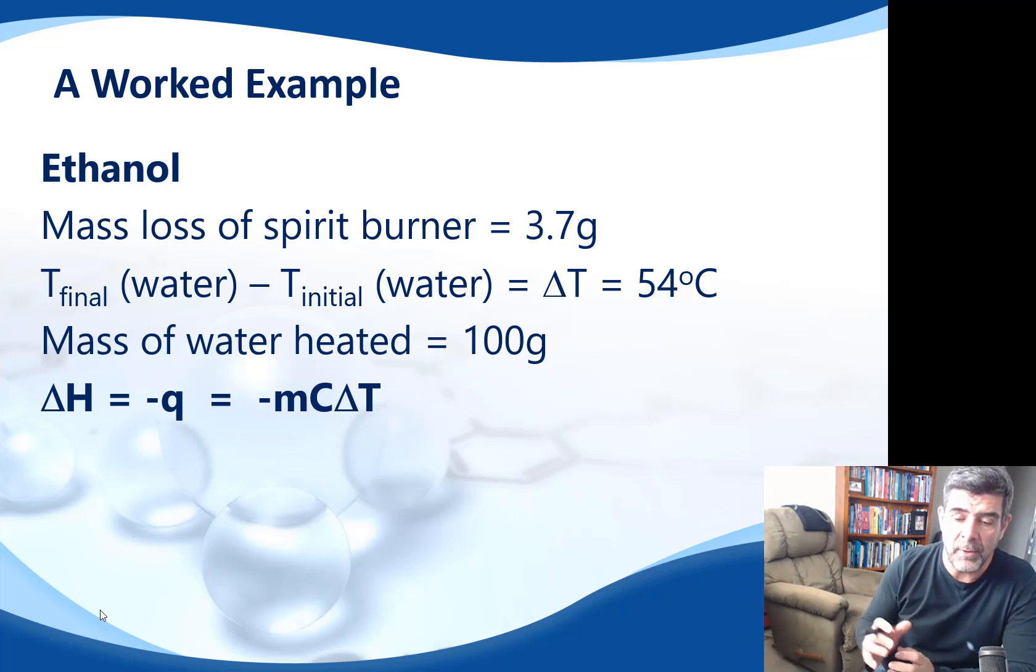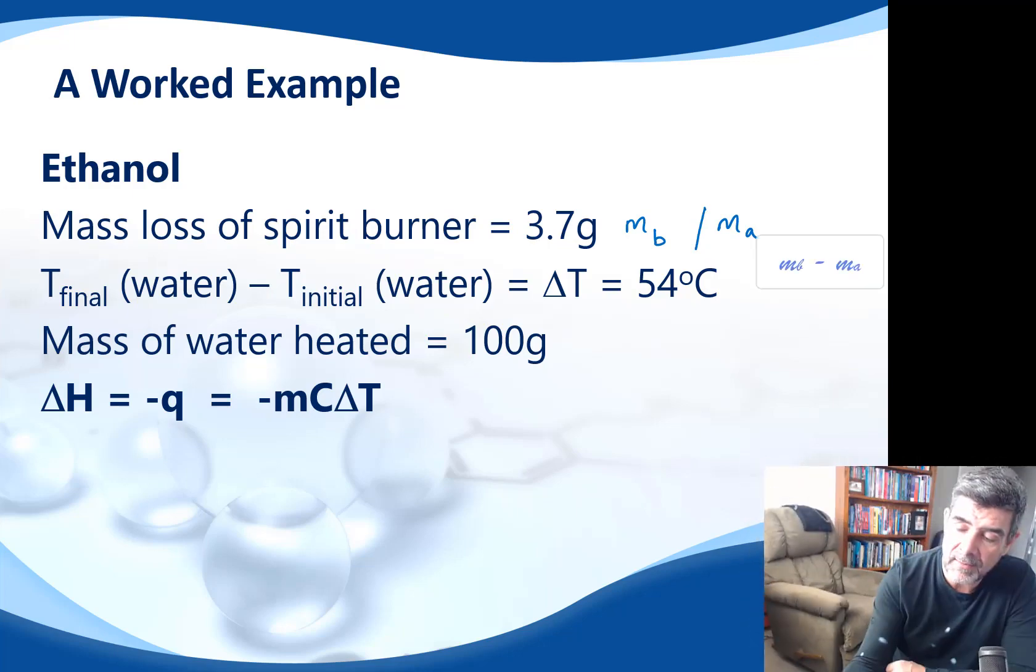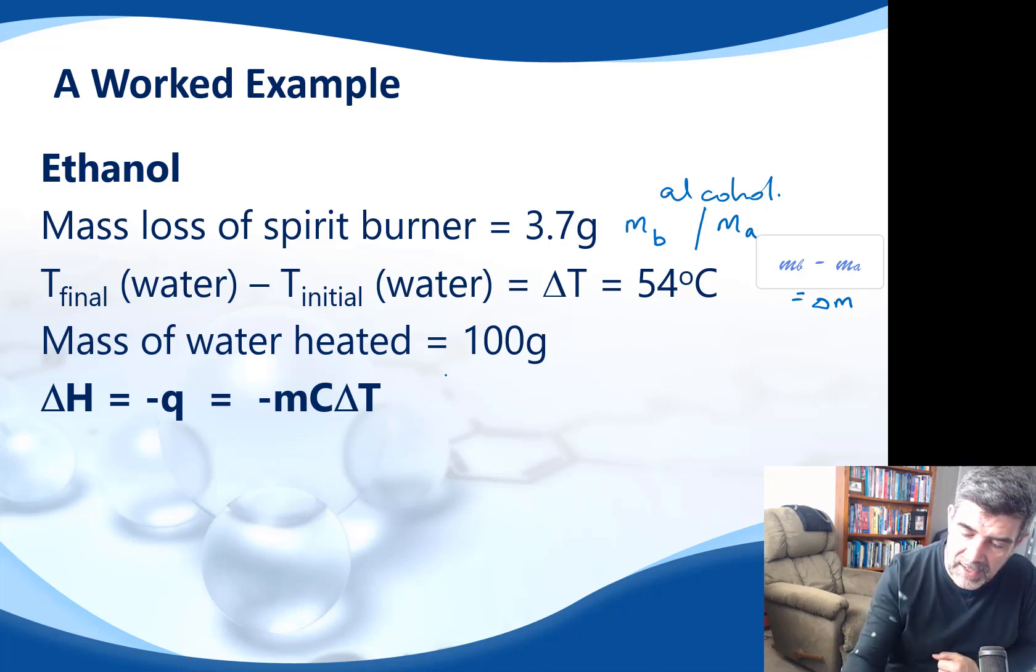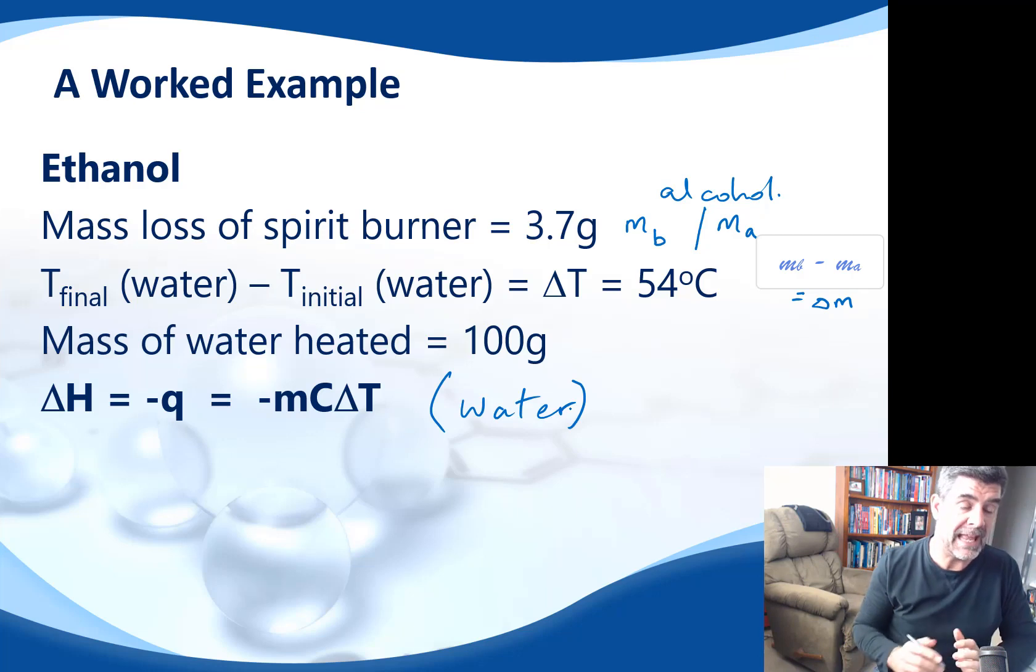You'll obviously, very importantly, need to measure the mass of the burner, mass before, and the mass after. And therefore, the mass before minus the mass after gives us the change in mass. Now, as I mentioned earlier, you will get a value of mass here, and the temptation is to put it into the MCAT formula, and we need to be very careful that we don't do that.